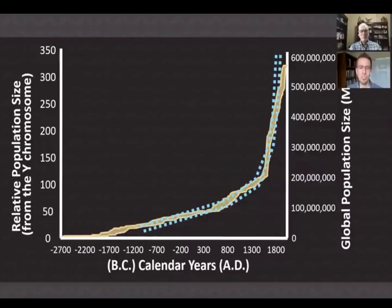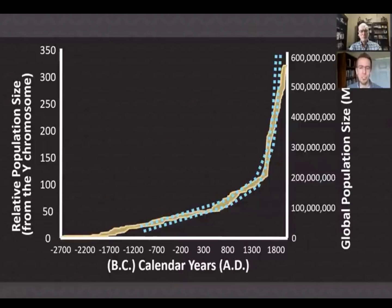These charts show how the relative population size from the Y chromosome matches up with the global population size. The Bible says that we are one blood, and Dr. Nathaniel Jeanson's research shows just how closely we are all related to one another.